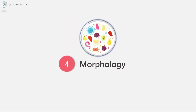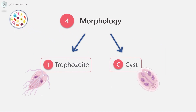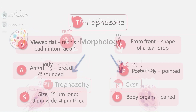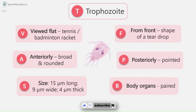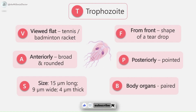Morphology: it exists in two forms — the trophozoite or vegetative form, and the cyst or cystic form. The trophozoite is in the shape of a tennis racket; it is heart-shaped or pyriform-shaped. When viewed flat, it appears as a tennis or badminton racket, and from the front it appears as a teardrop. It is rounded and broad anteriorly and pointed posteriorly, measuring 15 micrometers long, 9 micrometers wide, and 4 micrometers thick.